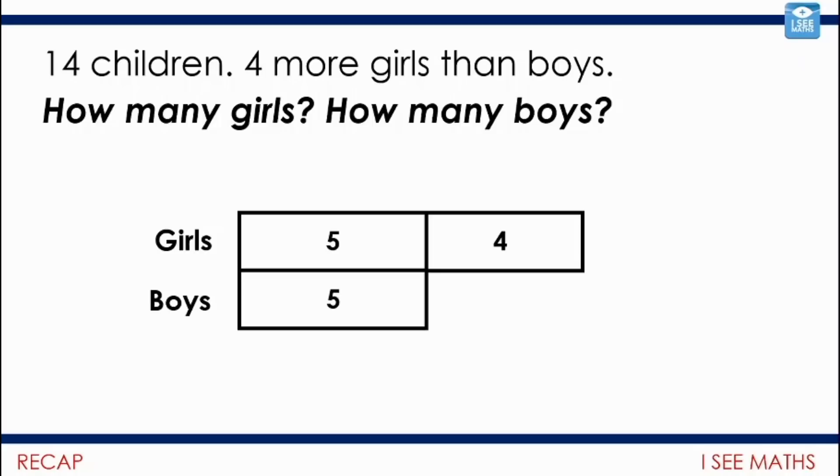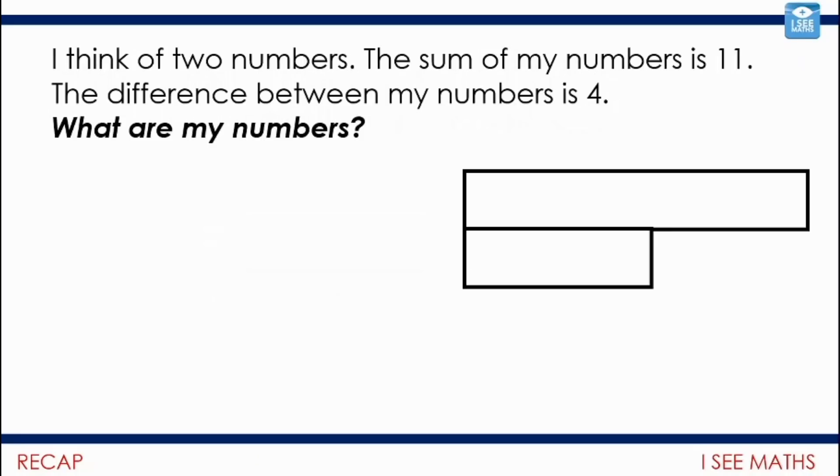Then we came on to this challenging question, which was the last one. If anyone got there on the tasks in the previous video: I think of two numbers, the sum of my numbers is 11, the difference between my numbers is four. What are my numbers? Same process—one number is more than the other, the difference is four. There was a little twist though. Pause the video and think: how is this question slightly different? Why might it be seen as being more challenging?